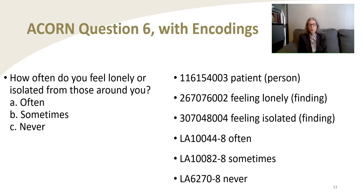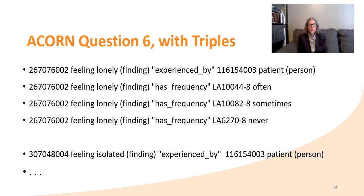This slide shows the ACORN survey question number six with the encodings from SNOMED CT and LOINC. Here are the triples for ACORN question number six. As one would think, you could use 'feeling lonely inheres in patient.' But this is not possible as SNOMED CT dictates that the domain of 'inheres in' needs to be an observable entity, not a finding. Like the triple you see here for 'feeling lonely,' we used similar triples for 'feeling isolated.'